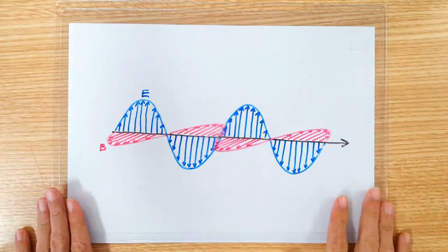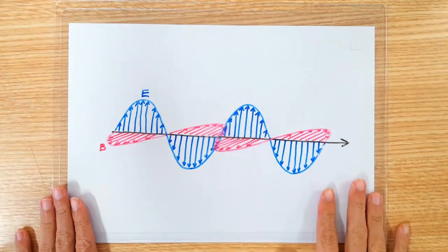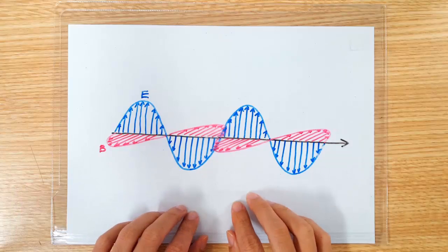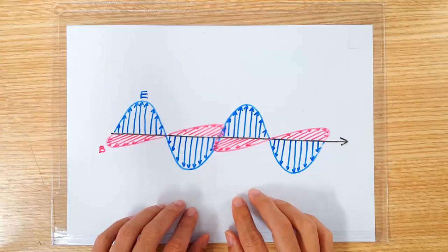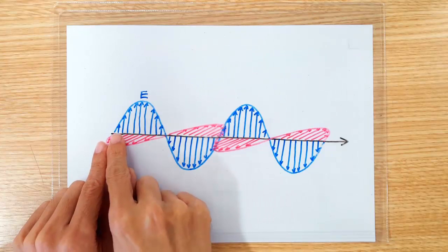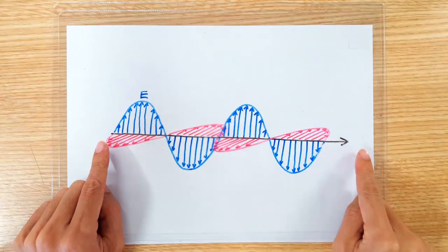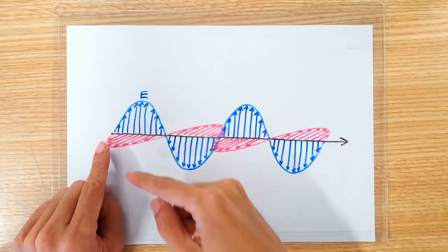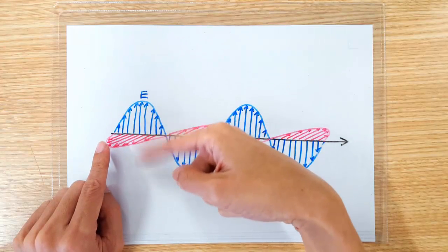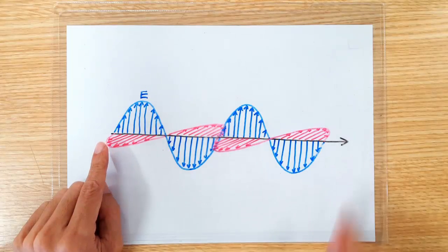In this video, I'm going to explain polarization. Now remember, light is an electromagnetic wave, and it's a transverse wave, which means if you have light propagating in this direction, you have an electric field that is oscillating in a direction perpendicular to the direction of propagation.